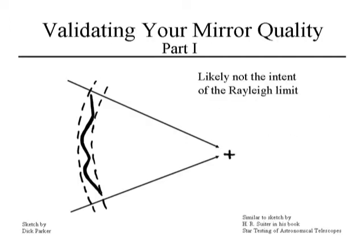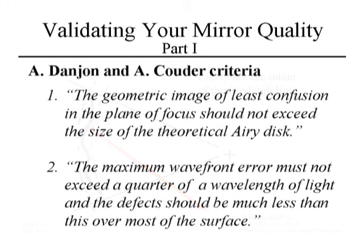The Rayleigh criterion is not intended to mean that anything goes between those two quarter-wave shells. Whether light hits the target — the Airy disk — is more a function of angle. If you have too many lumps and bumps in the wavefront, you can have angles sending light outside the center of the Airy disk.